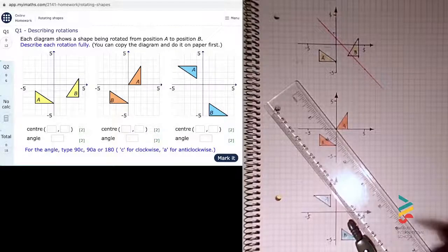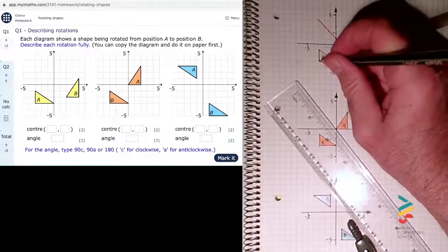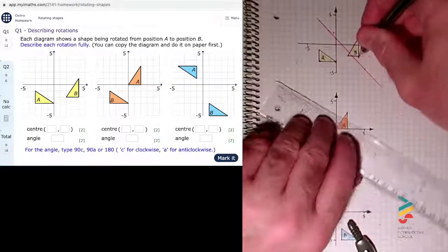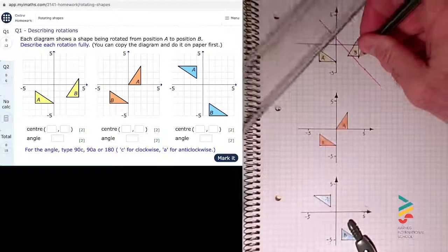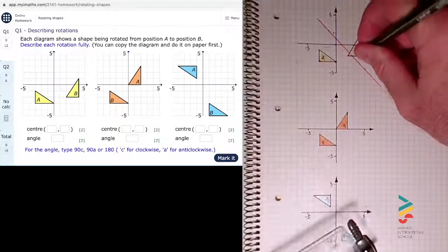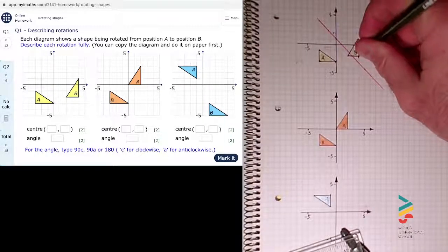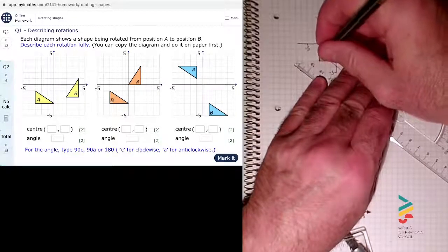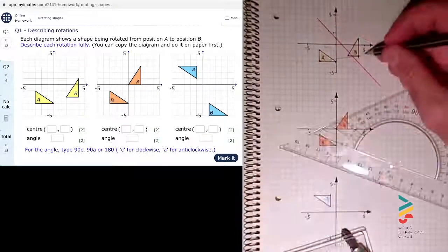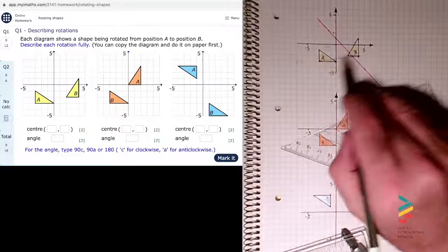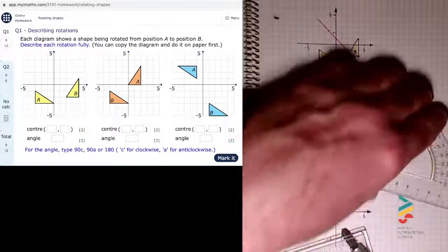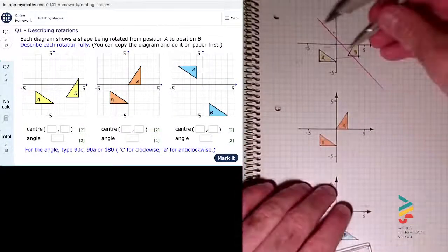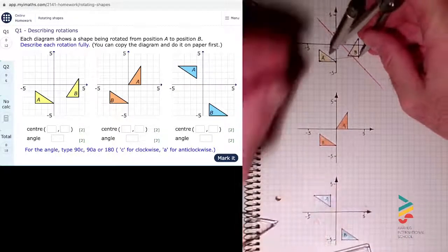I'm now going to do exactly the same thing but for two of the other points. For example, that one there and then its rotated equivalent over there. If I draw a line between those two points in the two shapes, those are essentially the same points I've joined up in the shape and its rotated equivalent, and then I'm going to construct a perpendicular bisector of that line.